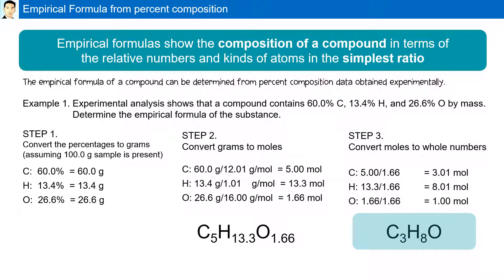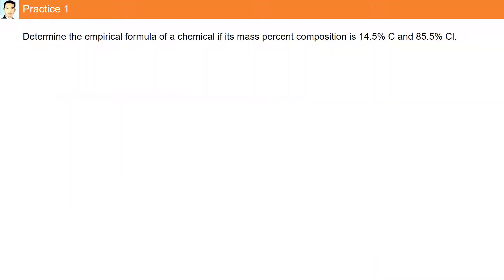C3H8O is the empirical formula of a substance containing 60% carbon, 13.4% hydrogen, and 26.6% oxygen by mass. Practice question 1: determine the empirical formula of a chemical if its mass percent composition is 14.5% carbon and 85.5% chlorine.